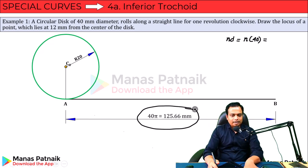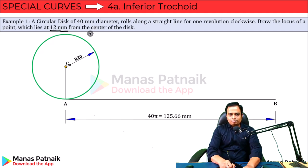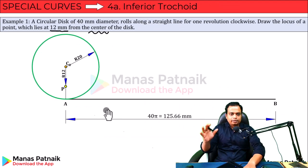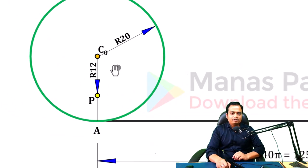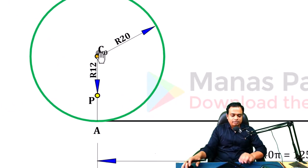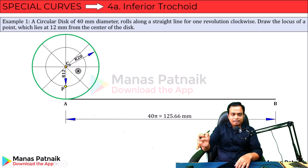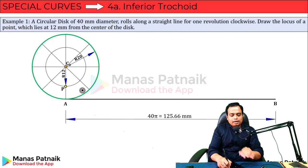This is the length of the line on which the circle is about to roll. Now, the point lies at 12mm from the center of the disc. Zoom in from the center and go downwards — mark a point 12mm below. Pass a circle through this point P, taking C0 as center and C0-P as the radius. Now divide this circle into eight equal parts. A short video link is provided in the description if needed.